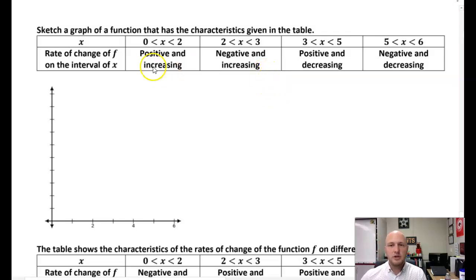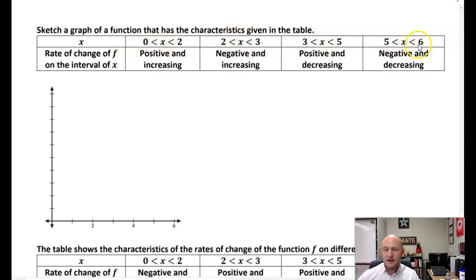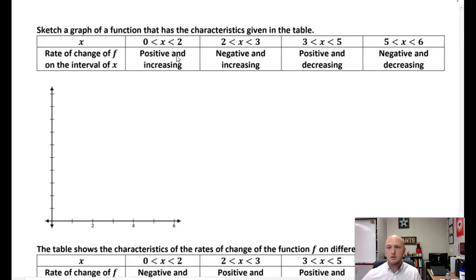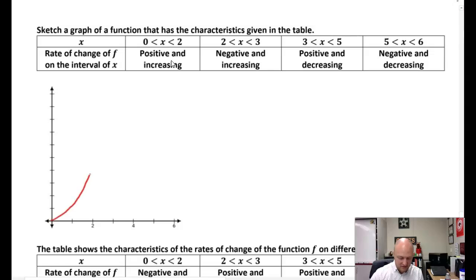For this next example, we're going to sketch a graph of a function that has given characteristics. From zero to two, the rate of change of F is positive and increasing; two to three, negative and increasing; three to five, positive and decreasing; five to six, negative and decreasing. So from zero to two, I want a positive and increasing rate of change — the function is going to be increasing, and how it grows is going to get faster and faster. Something like an exponential function.